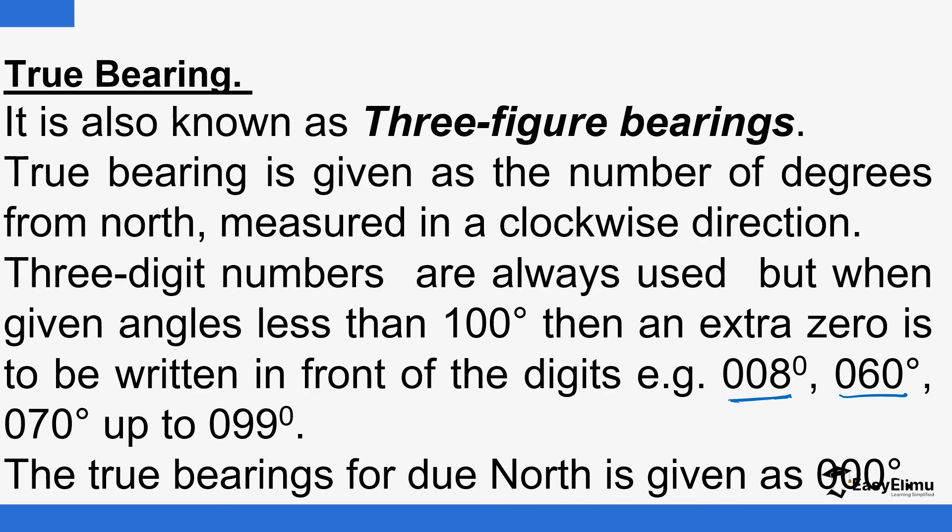Adding that zero does not really make any big difference in terms of value. So you can write 008 degrees, 060 degrees, 070 degrees. Now if it's a number like 100, then you just write 100. If it is 300, you write 300. So when you have something like due north, you'll write 000, it means you don't turn, due north.